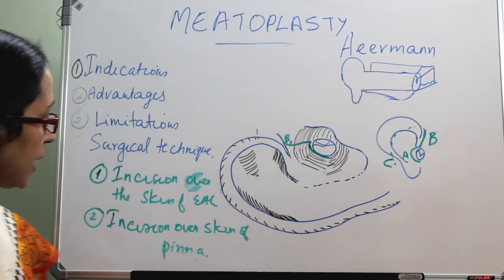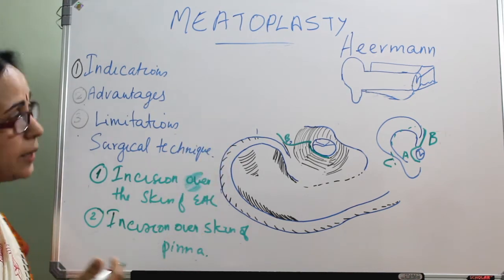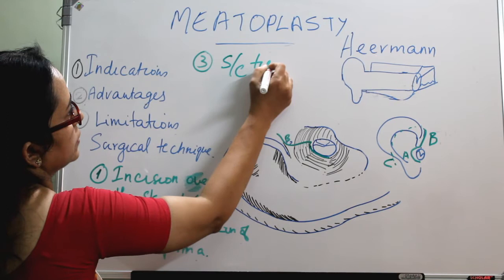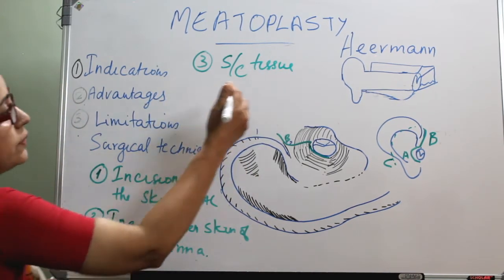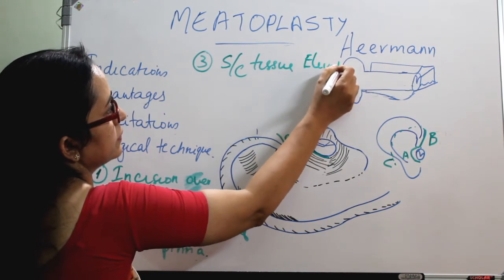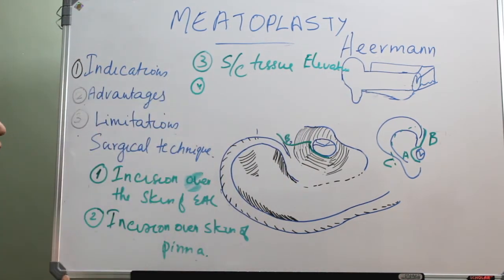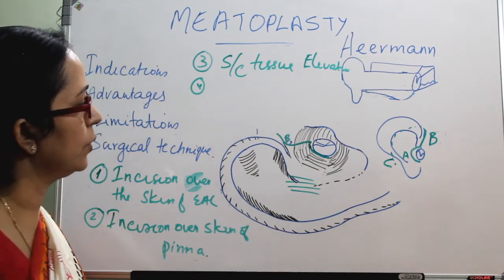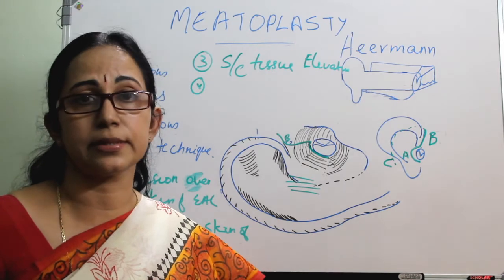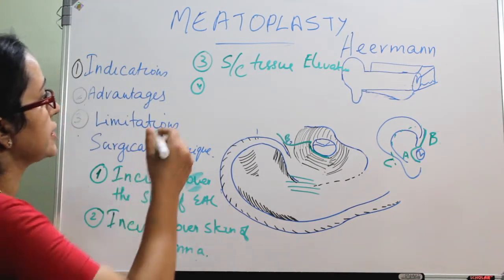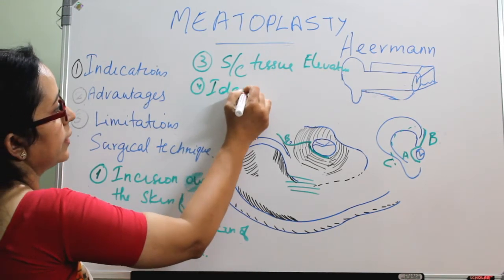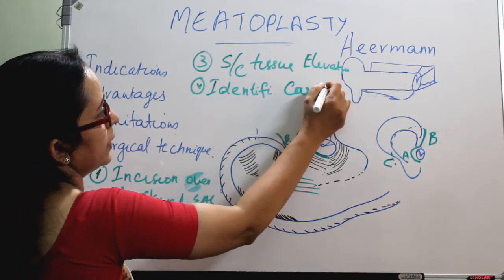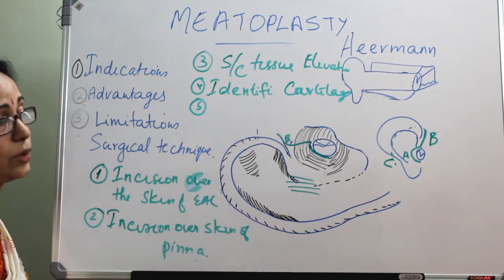Step three is elevation of subcutaneous tissue after the incision. Step four is identification of the conchal cartilage — in all cases, adequate resection of the conchal cartilage is needed. Step five is identification and then adequate resection of the conchal cartilage.